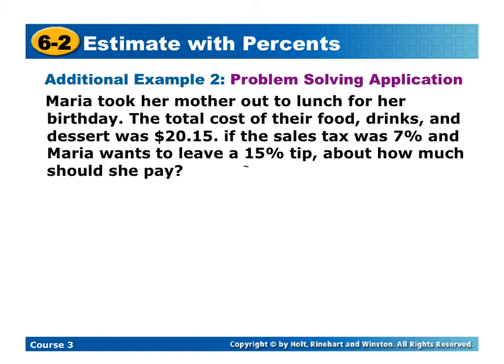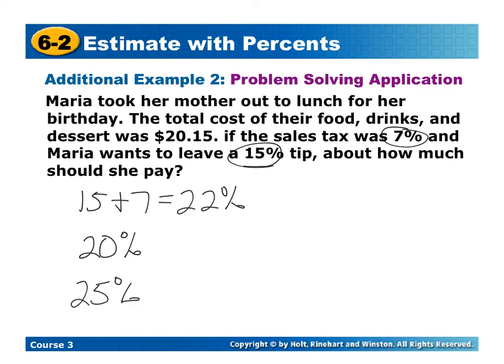So we're going to start by looking at our percentages. We have 15 and 7. So if we would take 15 plus 7, that's going to give us 22%, but we don't want to work with 22%. So here, I'm just going to change this to 20%. I could also change it to 25%, depending on how you want to look at it. So either one of those would be okay.